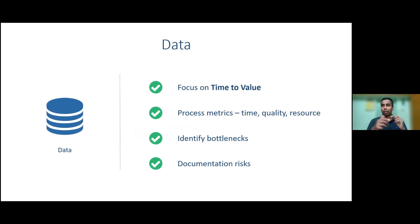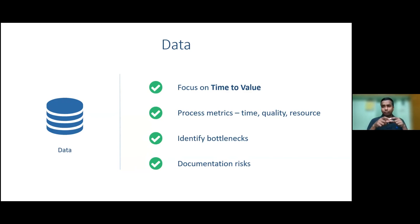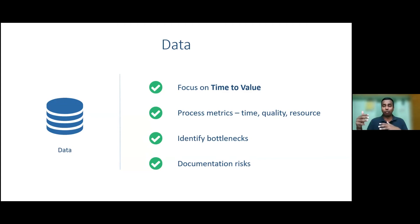Beyond time, quality metrics are also very important — someone might be doing a lousy job and passing it on, degrading quality over time. Define quality metrics empirically, as they vary by organization. Also capture resourcing: how many people does it take to deliver a chunk of work? All of these things help you optimize your process flow.